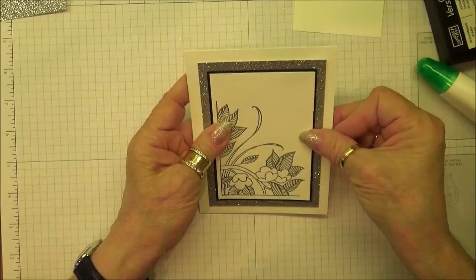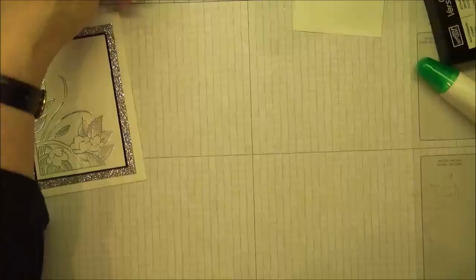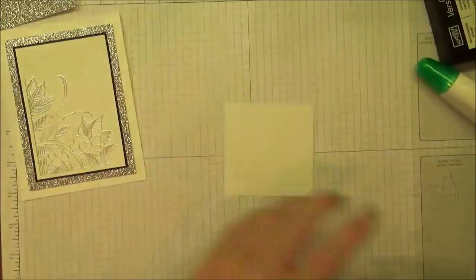Okay, so we'll glue that down. Now the last thing that we want to do is our dove here. On a separate white piece of paper, I'm going to use the black Memento ink and we're going to stamp the dove.